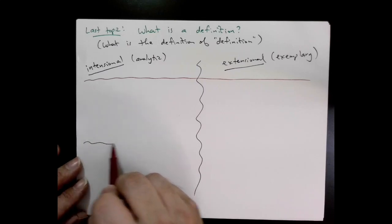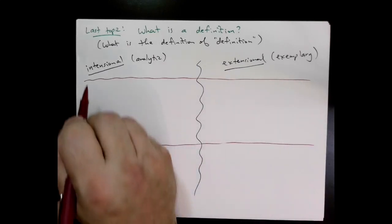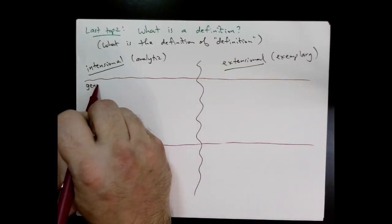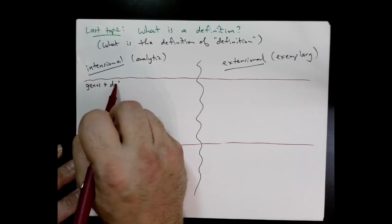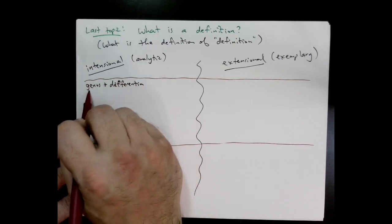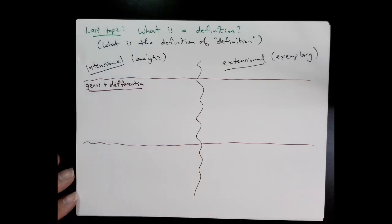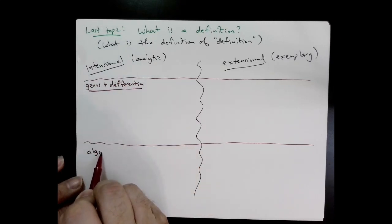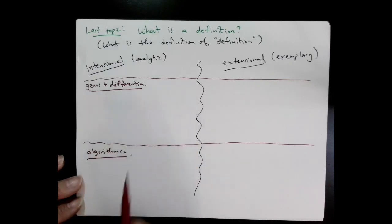Inside intentional, there's two very common types of definition we use in mathematics. The first one is the genus and differential type of model. The second one is algorithmic.